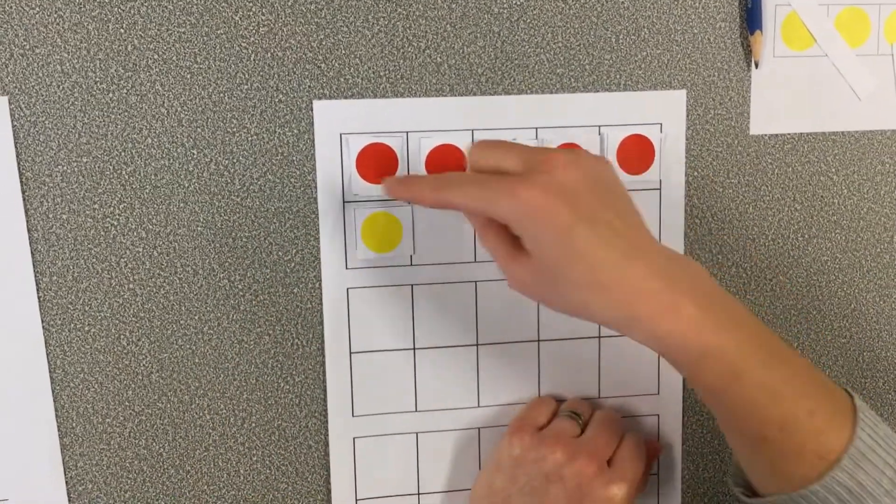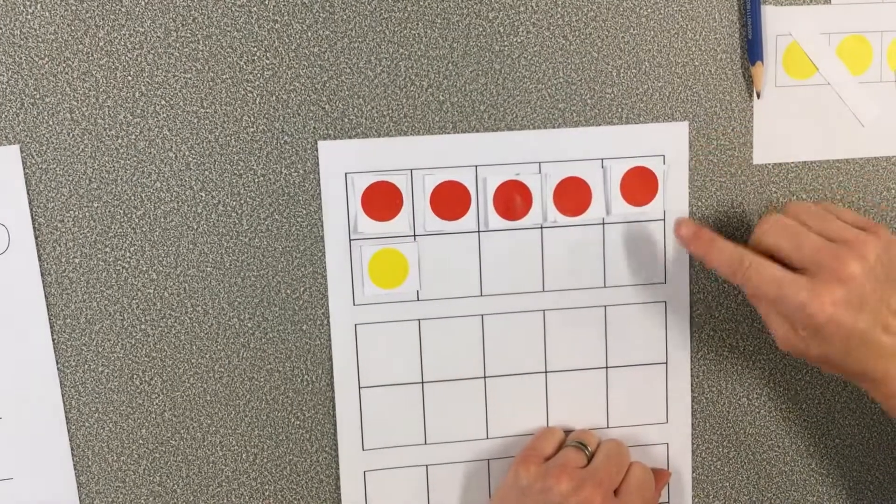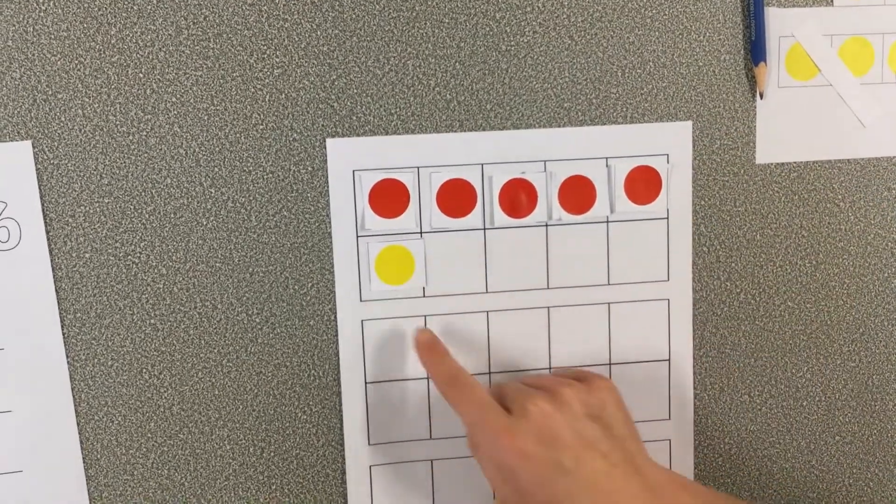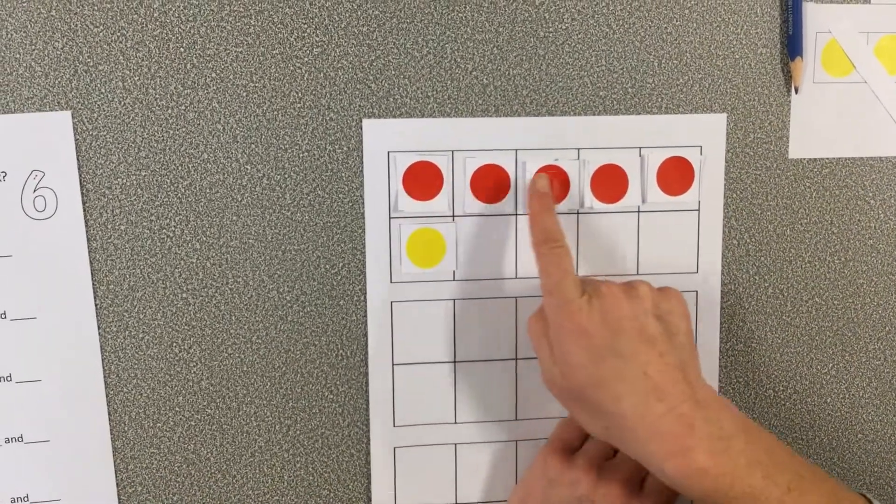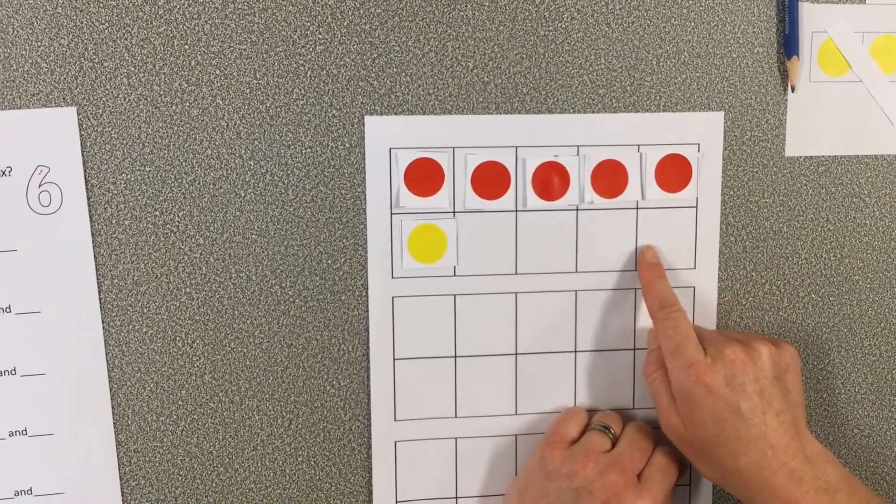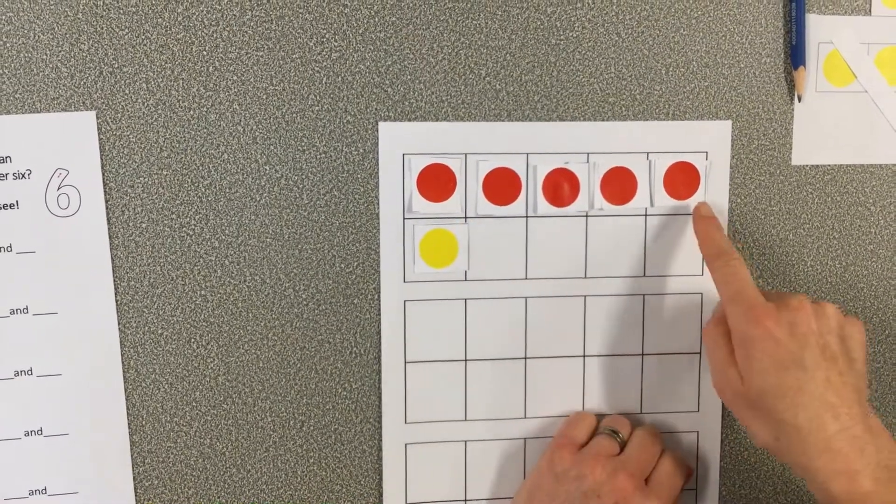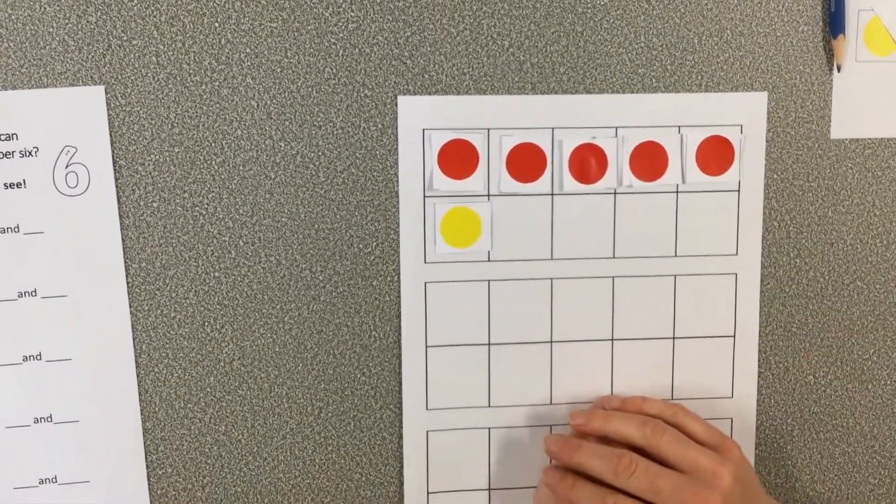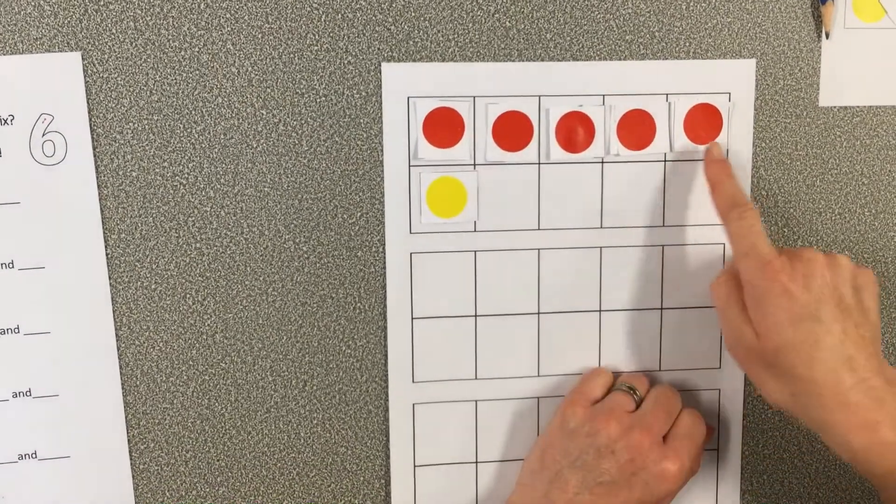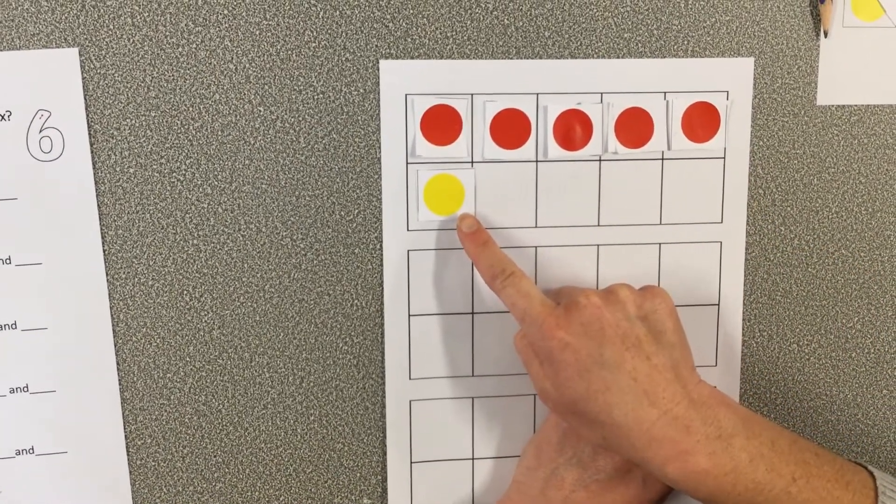And I can see using the tens frame, because we learnt yesterday that on a tens frame a row—there's five in a row. So one, two, three, four, five. That can really help me subitize. Now I can see five. So the number six can be made up from a group of five and a group of one.